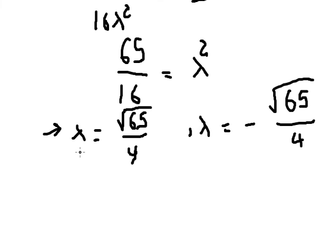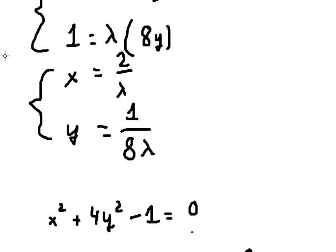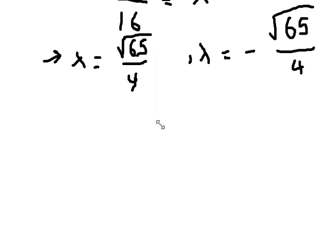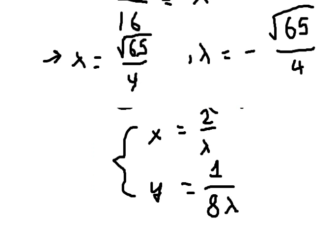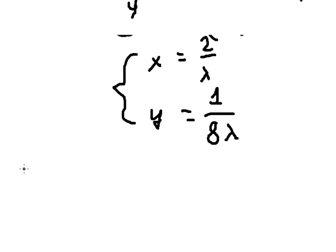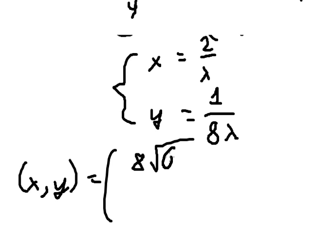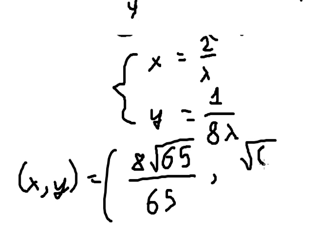After we have lambda, we can go back and find the values of x and y. If lambda equals the square root of 65 over 4, substituting into our expressions gives x equals eight times the square root of 65 over 65, and y equals the square root of 65 over 130.